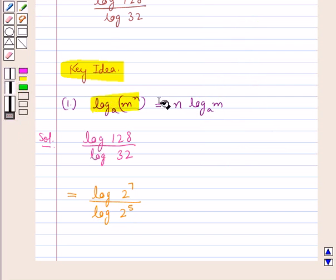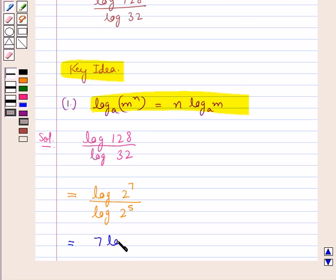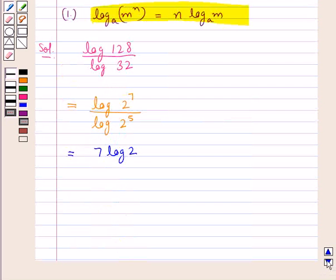Now using this key idea, that is this law of logarithm, we find that this is further equal to 7 log 2 upon 5 log 2. Now, this log 2 cancels with log 2 and we are left with 7 upon 5.